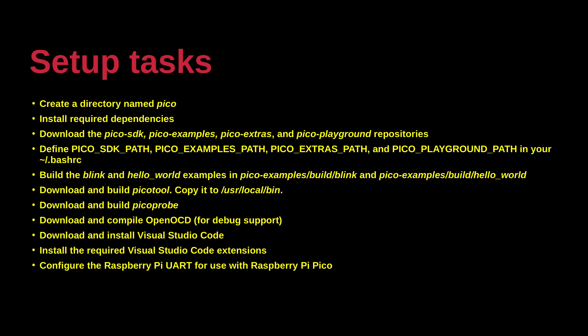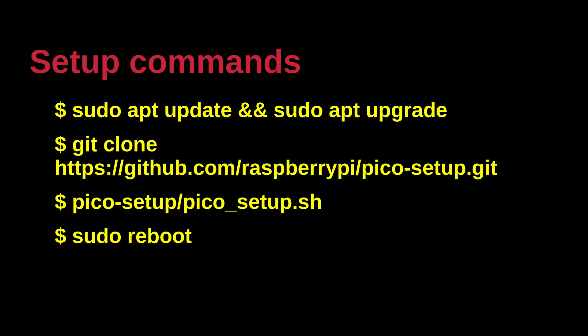The setup tasks require approximately 40 minutes on a Raspberry Pi 3B model computer. A single command will take care of running all tasks sequentially without further manual intervention. It is always prudent to run update and upgrade before running these commands. It is highly recommended that the repository be cloned from GitHub, then run the setup script. At the conclusion of the setup script, a reboot is necessary to make the installed libraries and utilities available for development use.